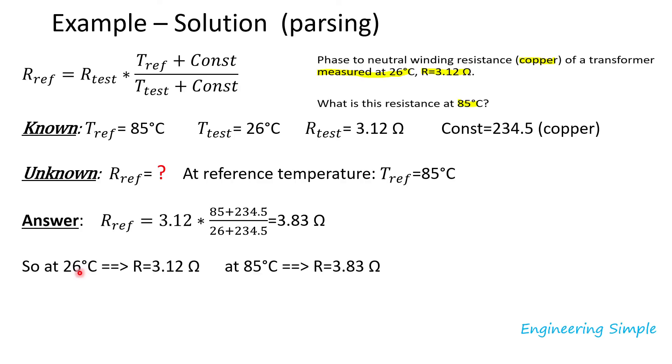So at 26°C the resistance was 3.12 ohms, and at 85°C it becomes 3.83 ohms — approximately a 22.7% increase in resistance, confirming that resistance increases with temperature. Thank you, I hope you found that useful. This was a quick tutorial on winding resistance measurement and how to convert resistance from one temperature to another. With the same equation, if you know the resistances, you can also solve for the temperature.